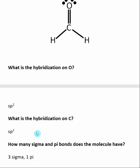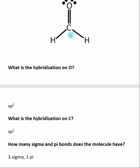Next, I like to determine how many sigma and pi bonds the molecule has. Remember, the orbitals that go into making sigma and pi bonds are going to be different. Remembering that a double bond is made up of a sigma bond and a pi bond, I can say that this molecule has three sigma bonds and one pi bond.